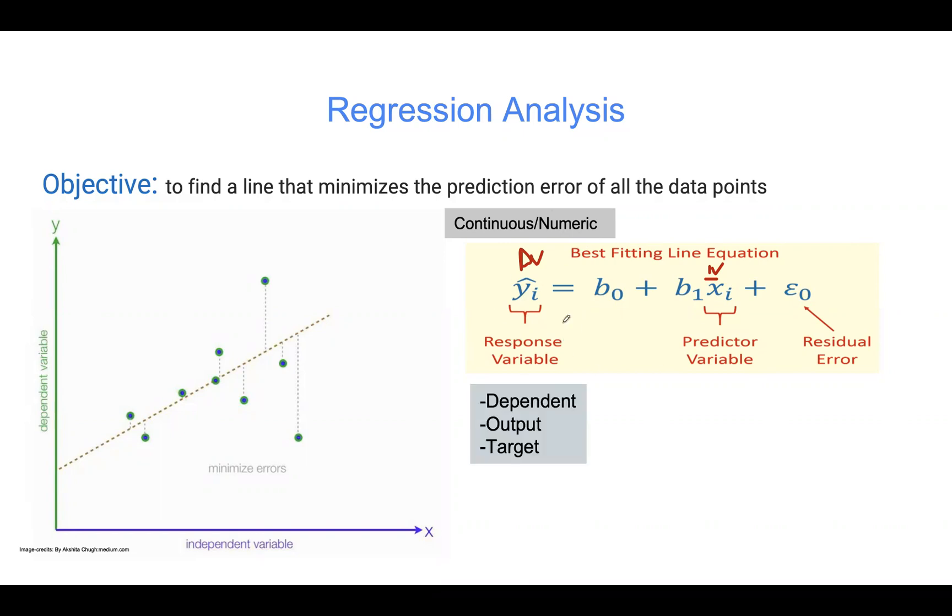Other names we can call the response variable: in some literature, you'll find that we call Y the dependent variable, or the output, or the outcome variable, or the target variable. For predictor variables, we can also call these independent variables, or input variables, or explanatory variables. The difference between the actual and the predicted value, we call that the residual error. The residual is the same as the difference between the actual value minus the predicted value. This is kind of represented as Y minus Y hat. Y hat here is the predicted value, and Y here is our actual value.